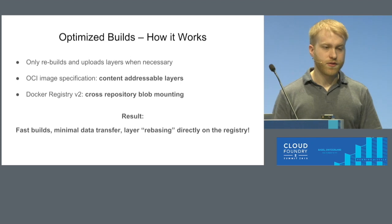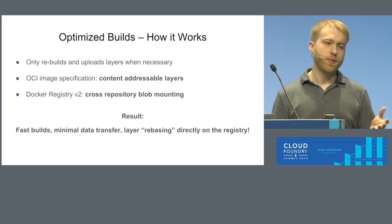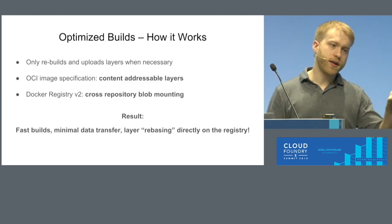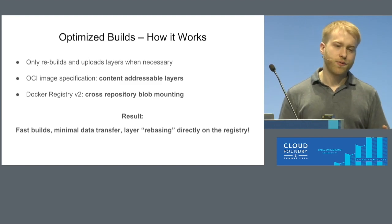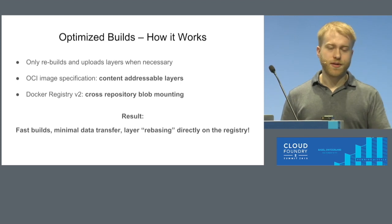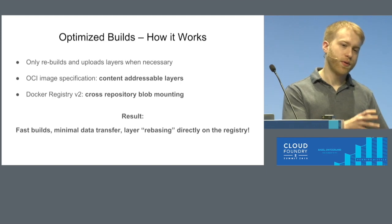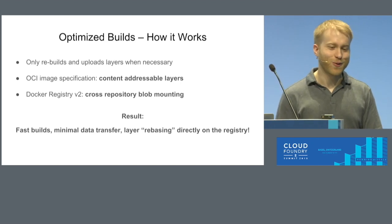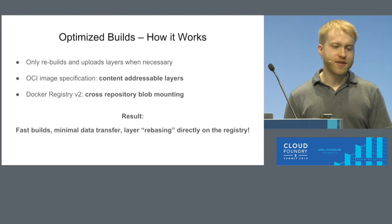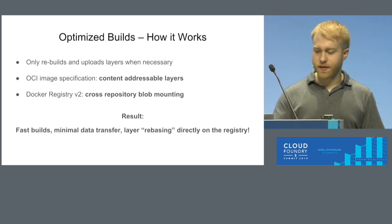Another feature we take advantage of is a new feature in modern Docker registries — the Docker v2 registry — called cross-repository blob mounting. We can have one image repo that's a source of the rootfs for lots of other image repos. Without any significant data transfer, we can point a thousand image repos at a new base image just by going across each image and making a small metadata change. This would let you take the Cloud Foundry model — where we have the cells rolling — and replay that on top of a Docker registry to get the same benefits. The result of using these two strategies together is that we get really fast builds, really minimal data transfer, and we can do the layer rebasing thing directly on the registry.